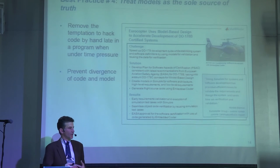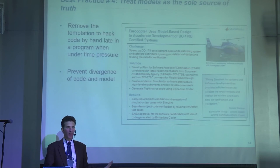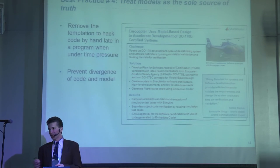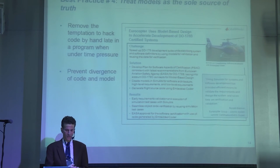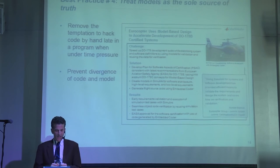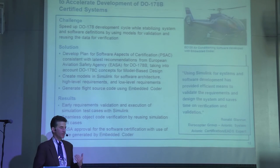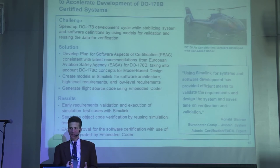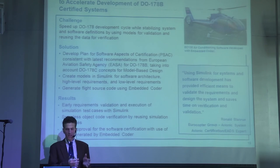Best practice number four is to treat the models as the sole truth. Once you start to treat the model as just an artifact along the way — rather than where all your truth lies — it becomes very easy to update the artifacts instead of the truth. If specification documents are generated from the model and the code is generated from the model, then when you have a problem, you'll fix it in the model rather than opening a Word doc and changing a word. It really removes the temptation to hack code and prevents that divergence.